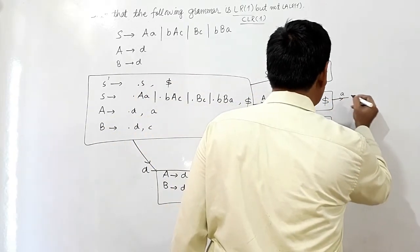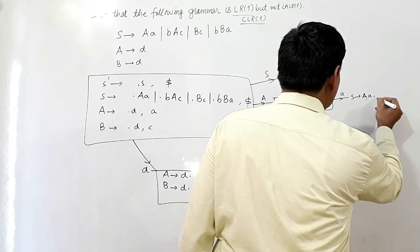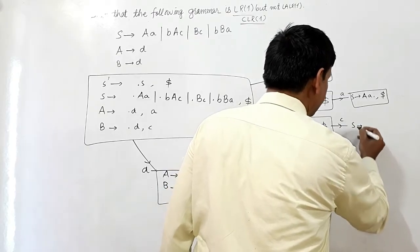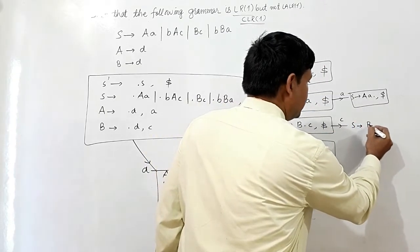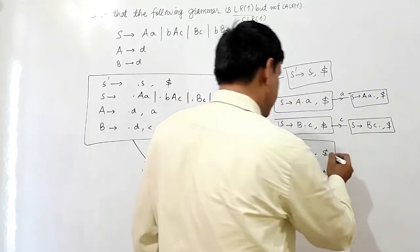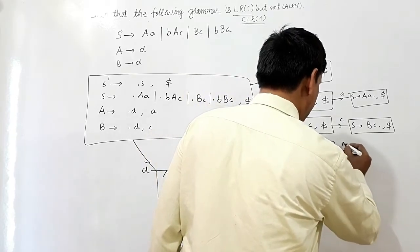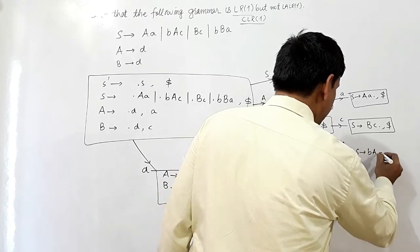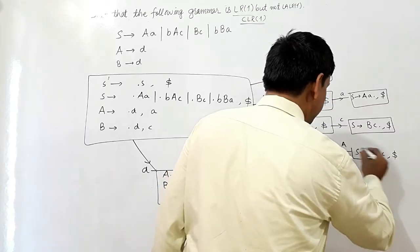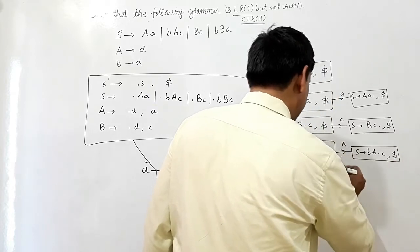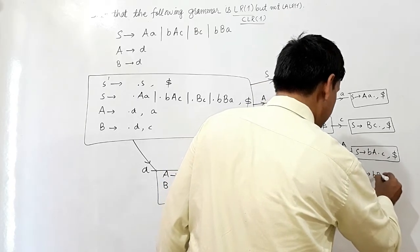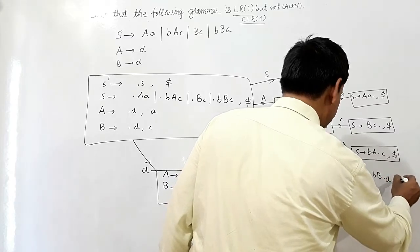If I read small C, S will give me BC dot, with lookahead dollar. If I read small C again, S will give me B dot, with lookahead dollar. If I read capital B, S will give me B dot, with lookahead dollar. There will be no change in the lookahead.